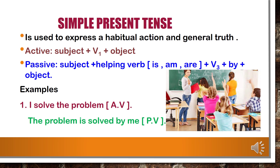Next we will see the first type, that is simple present tense. Simple present tense is used to express a habitual action and general truth. Now we will see the rules of active voice and passive voice in simple present tense. In active voice: subject plus V1 plus object, where V1 is the present form of the verb. In passive voice: subject plus helping verb (is/am/are) plus V3 plus by plus object, where V3 is the third form of the verb.